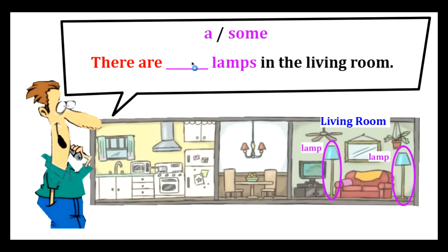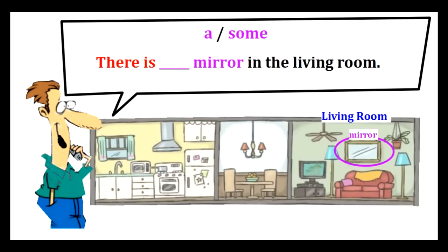There are some lamps in the living room — 'some' because it's plural. Remember, we never use 'a' when we have a plural, never. A or some? There is a mirror in the living room — 'a' because we have a singular. A mirror. Some is never for singulars, never. Very good.